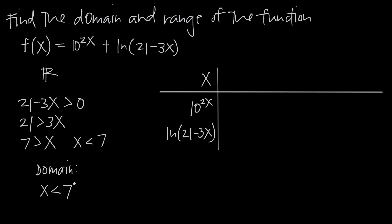Now, what about the range of the function? The range is all of the y values we can get back by plugging in x values from the domain. So for x, we could plug in negative numbers, 0, or positive numbers all the way up to 7, just not including 7. Sometimes you can determine the range by sketching the graph, or you may be able to figure it out algebraically. I'm going to show you one way to do it that's pretty easy.